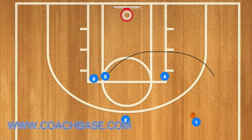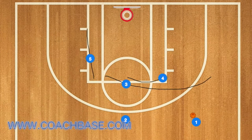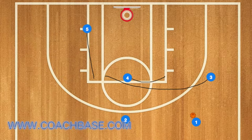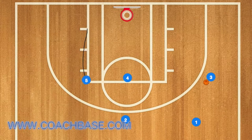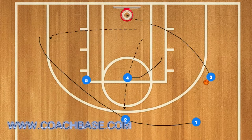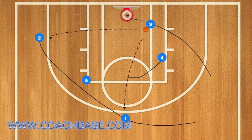Player 3 will set a screen for player 5, and 5 will go into the low post, while 4 sets a screen for 3 and 3 pops out to the right wing. Player 1 will then pass 3 the basketball and 5 will go to the high post, while 3 cuts towards the rim. 2 uses 5 as a screen and 1 pops up to the top of the key.